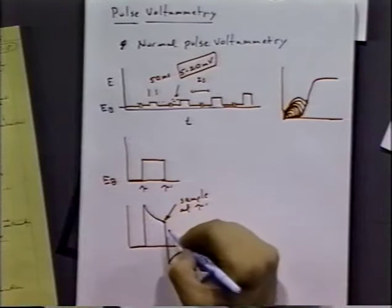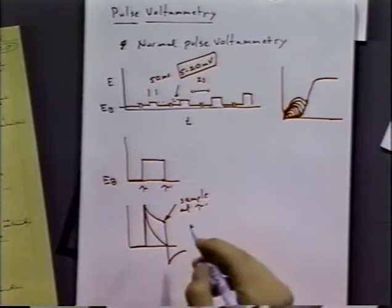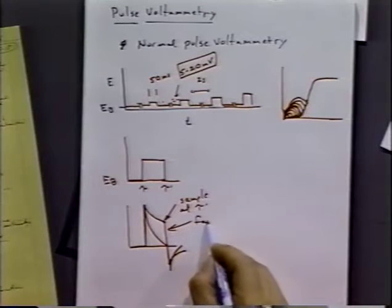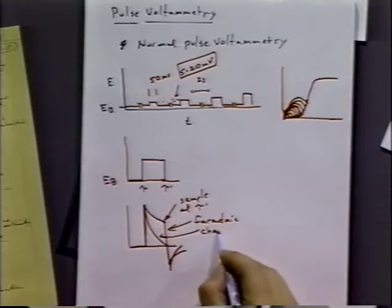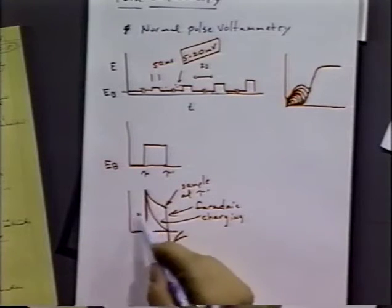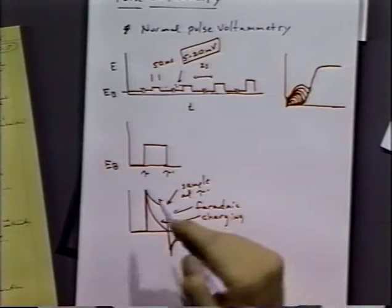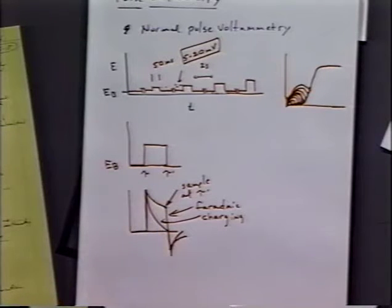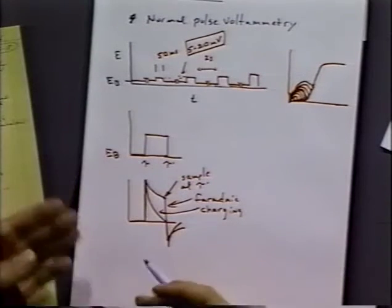The advantage of sampling at a later time is that there's charging current also involved in the process. We have a Faraday current and practically we have some charging current. We haven't talked about charging current in the theory, but in experiments we have to worry about it. And because of the way the charging current is, it's going to decay much more rapidly than the Faraday current.